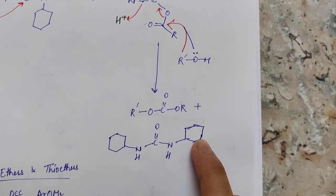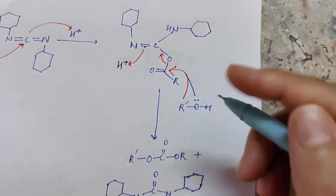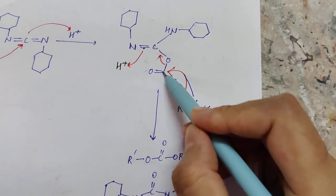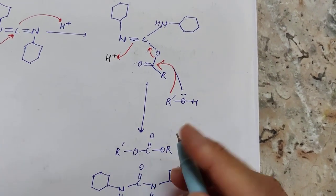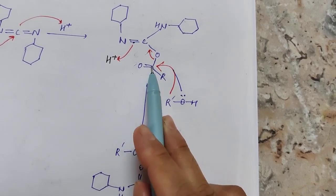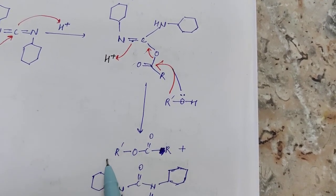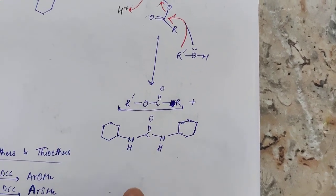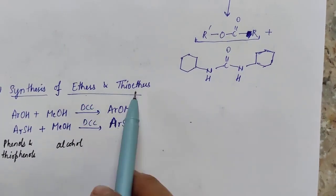From this bond cleavage we obtain N,N-dicyclohexylurea as a byproduct. For the remaining part, the oxygen of the alcohol is attached to the carbonyl carbon, giving R-CO-O-R', which is the ester. This is how ester formation takes place; similarly, thioester synthesis also proceeds.